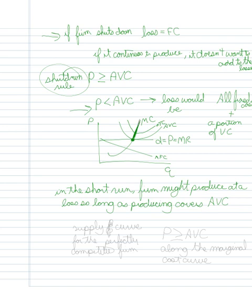The supply curve, then, for the perfectly competitive firm is wherever the price exceeds the average variable cost along the marginal cost curve. This shaded-in region right here.